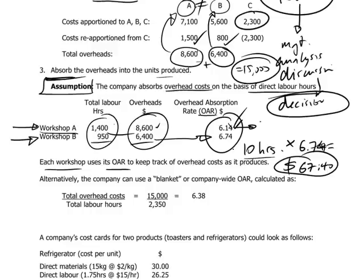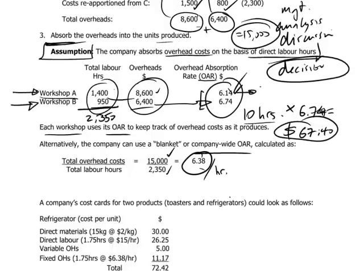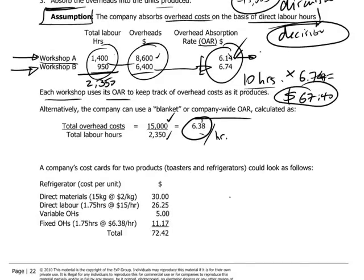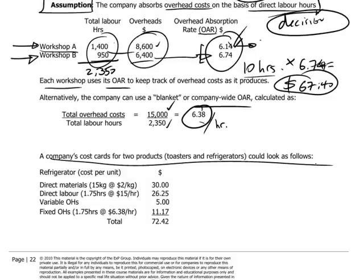The other way to solve this problem, if there isn't a great variance between absorption rates in the two workshops, is to do a company-wide overhead absorption rate. This means we simply divide the total overhead cost of $15,000 by the total number of budgeted direct labor hours in the company — $2,350 hours — giving an overhead absorption rate of $6.38 per direct labor hour. We can then apply this company-wide overhead absorption rate in coming up with a cost card for our specific products, the toasters and the refrigerators.